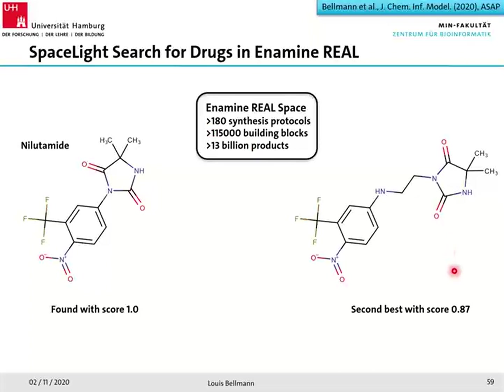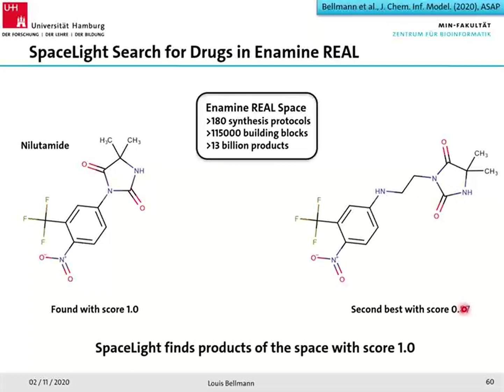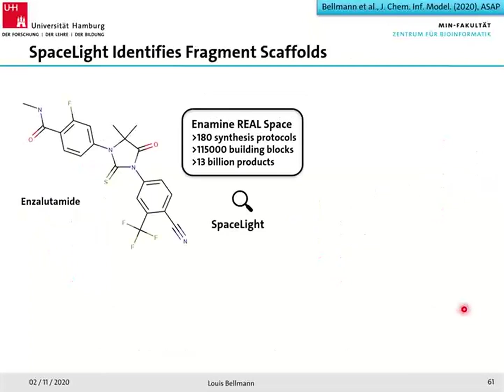The take-home message is that you can quickly check — in a couple of seconds — whether a compound can be ordered from Enamine, or whether it exists in your in-house space or a publicly available space. If you do not get a score of 1.0, you know it's not contained. Another thing you can do involves scaffold search mode: we use ensalutamide, another approved drug, as a query and the highest score is 0.62 — the compound is not contained. The scaffold search mode detects fragments that form chemical substructures of your query for further optimization or synthesis route insights.